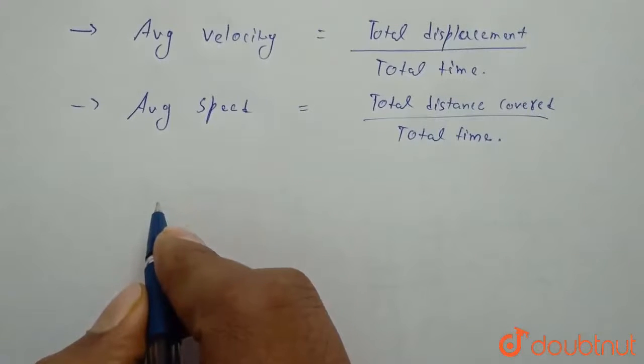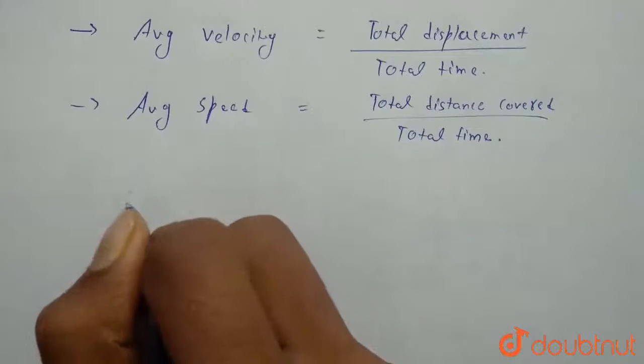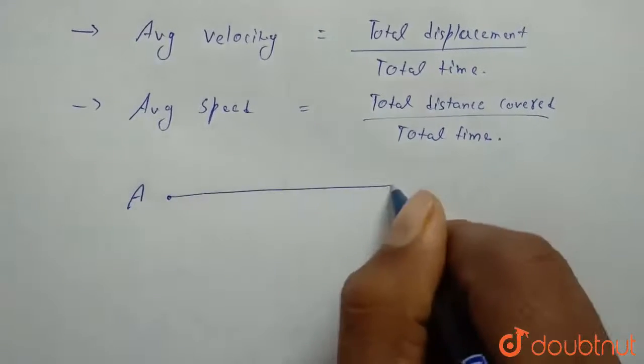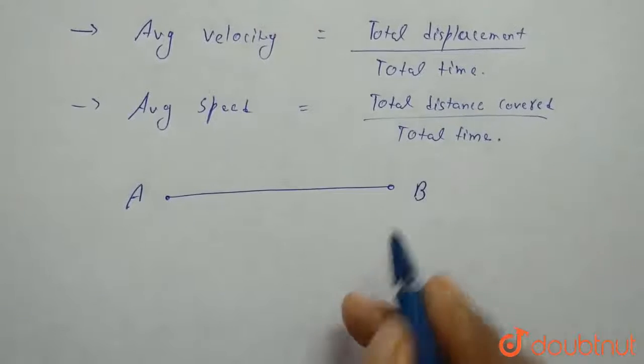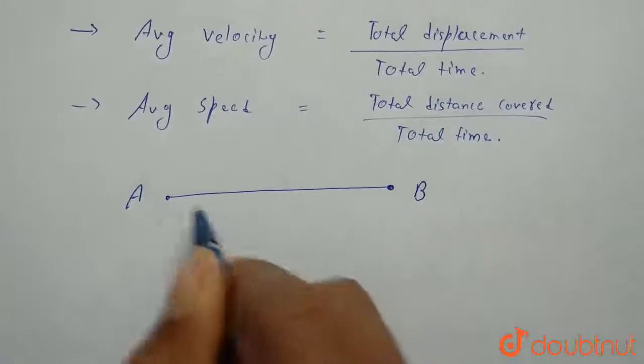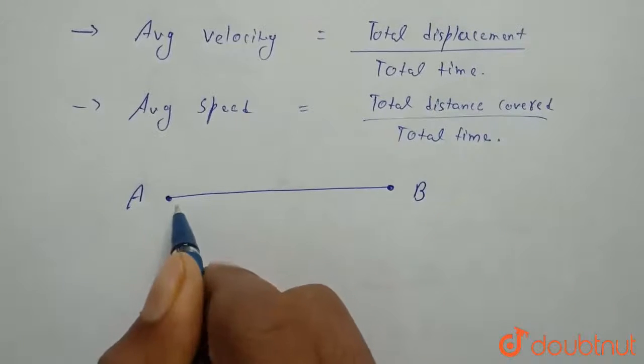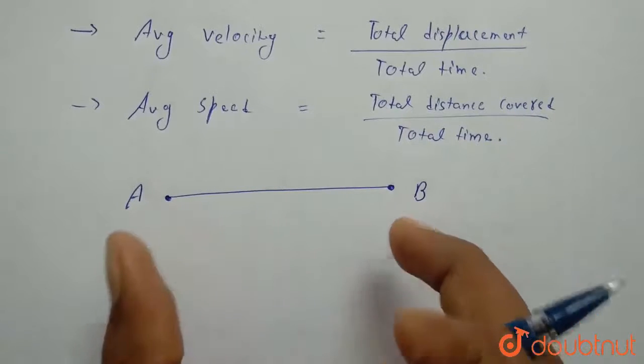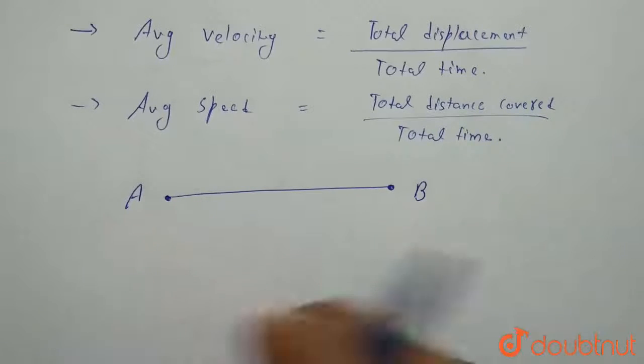When displacement equal to distance covered, if particle moves in a straight line, suppose a particle starts from A and goes to B, then its distance covered will be distance between A and B and displacement will be shortest distance between A and B.